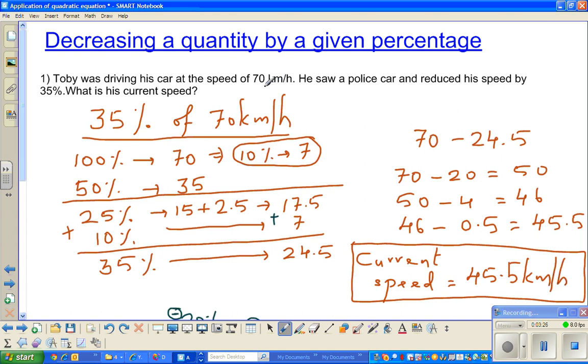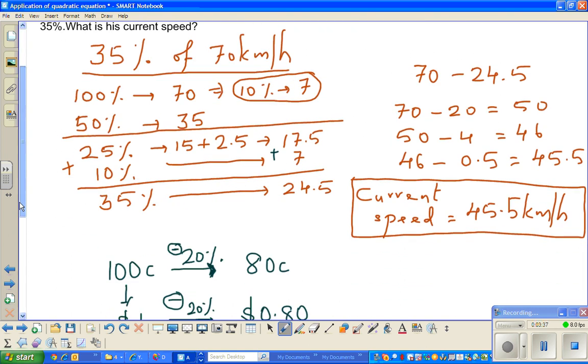But in real life, in many situations, you may be given this and you may be asked to find backwards. That means his current speed is, say, 45.5, and this was reduced by 35%, and you want to find his original speed.